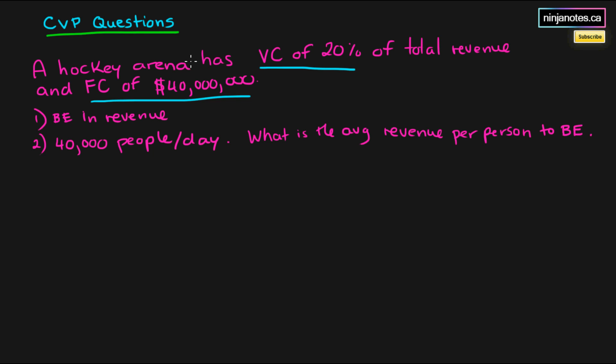A hockey arena has variable costs which are 20% of total revenue, and fixed costs of $40 million. Let's find the breakeven point in revenue.